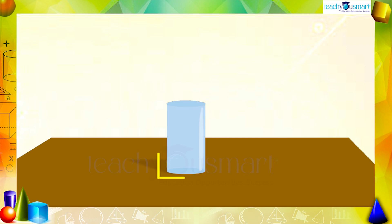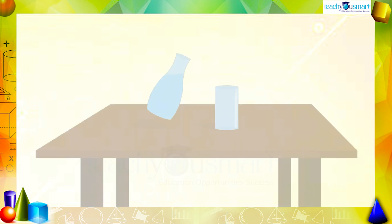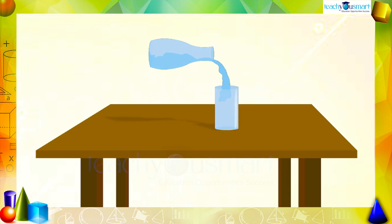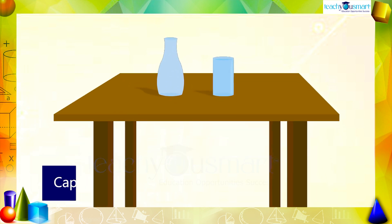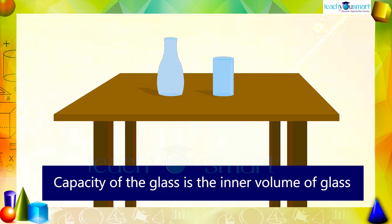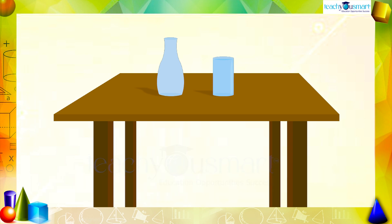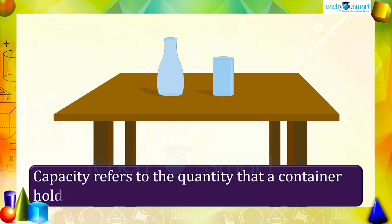We can say that the volume of the glass is the amount of space occupied by it. When the glass is filled with water, the amount of water it holds is termed the capacity of the glass — that is, the capacity of the glass is the inner volume of the glass. In most cases the thickness of a container is negligible, so we treat the capacity as volume. In general, capacity refers to the quantity that a container holds.